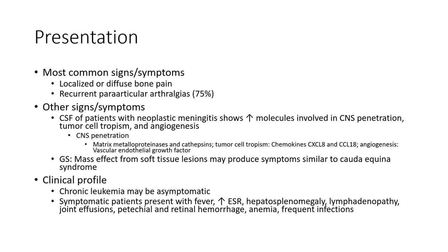Most common signs include localized or diffuse pain, recurrent periarticular arthritis at 75%. Other signs and symptoms involve increased molecules involved in CNS penetration, tumor cell tropism, and angiogenesis. CNS penetration involves matrix metalloproteinases and cathepsins. Tumor cell tropism involves chemokines CXCL12, CXCR4, and CCR7. Angiogenesis involves vascular endothelial growth factor.